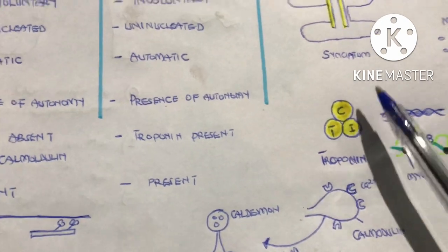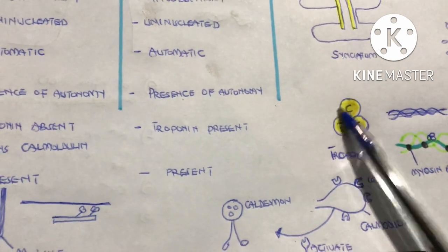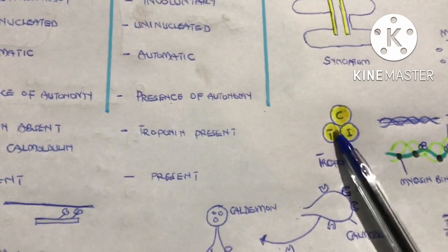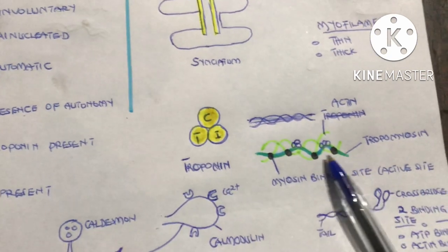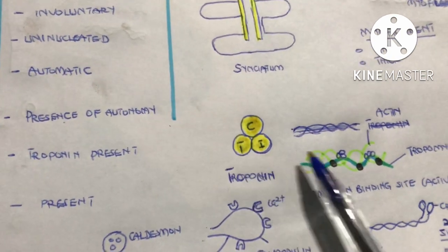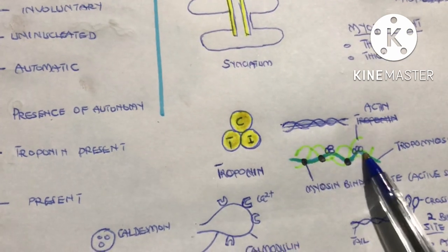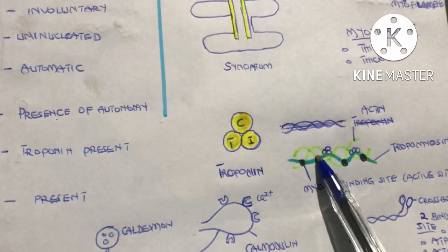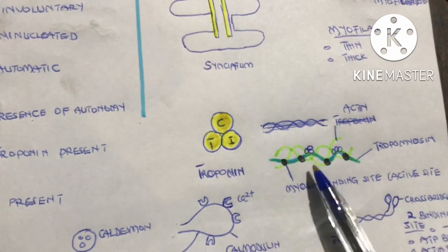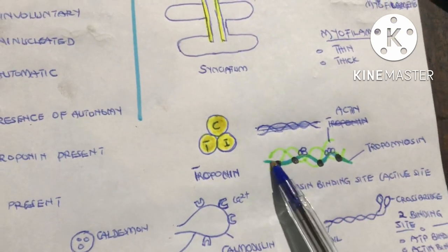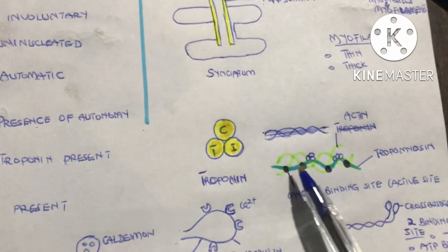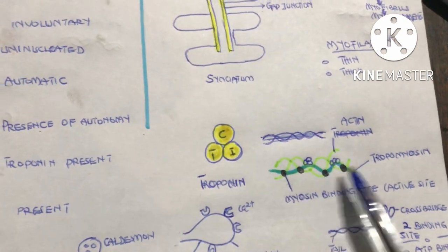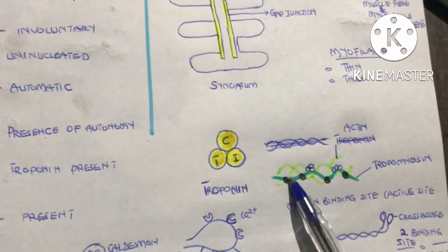Calcium binds to troponin C, causing troponin to undergo a conformational change. Troponin is bound to tropomyosin via troponin T — the tropomyosin blocks the myosin binding sites on the actin, which are the dark places where the head of the thick filament (myosin) will bind to cause the sliding effect.